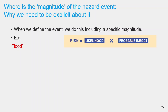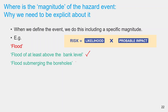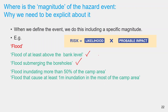Let us look at some magnitude statement examples. 'Flood of at least about the bank level' — that gives some idea about the magnitude of the event. 'Flood submerging the boreholes' — this is implicitly a magnitude statement because the flood has to rise to a certain level to cover the boreholes. 'Flood inundating more than 50% of the camp area.' 'Flood that causes at least 1 meter inundation in most of the camp area.' These are also examples of magnitude statements.